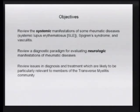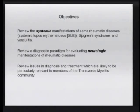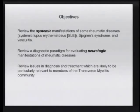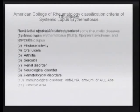The goals of this talk are threefold. First, I want to introduce some of the systemic manifestations of the rheumatic disorders. Then I want to go over a basic diagnostic paradigm for how we think about the neurological syndromes which can occur in the rheumatic disorders. The last part introduces diagnosis and treatment issues especially salient to the transverse myelitis community. Within 30 minutes I can't exhaustively cover all rheumatic syndromes, so I'll focus topically on things interesting to patients here.